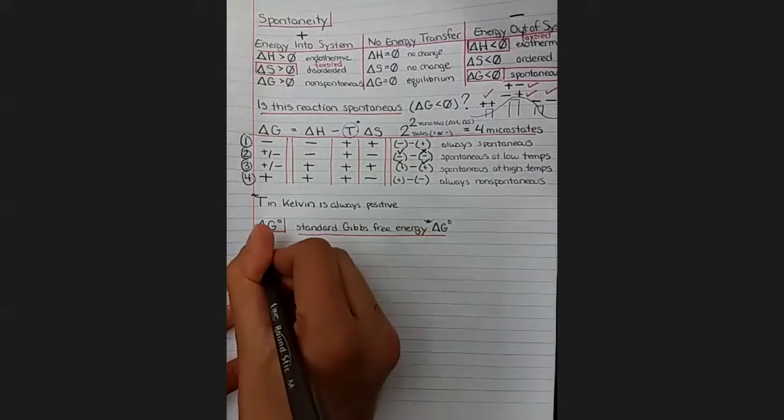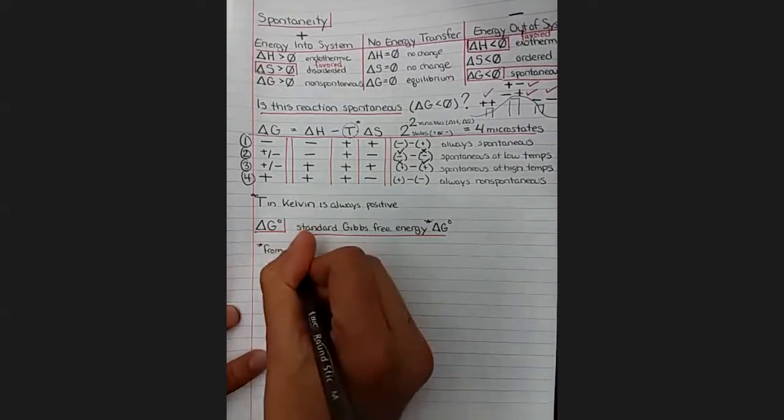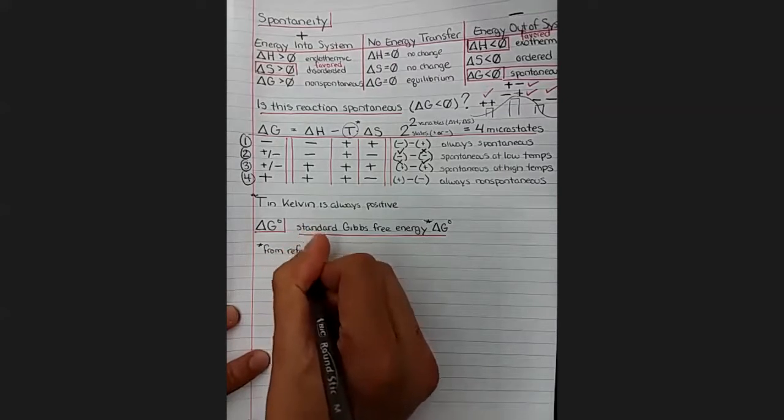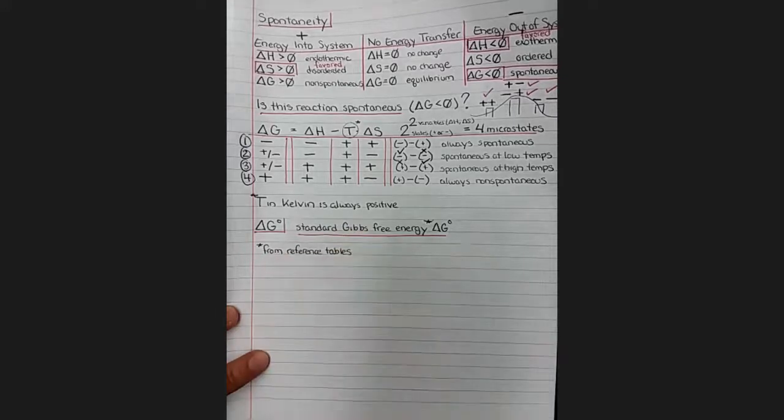And again, asterisk. We choose these standard conditions so that we can make reference tables of these numbers. So we can look them up so we don't have to measure all of them all of the time.